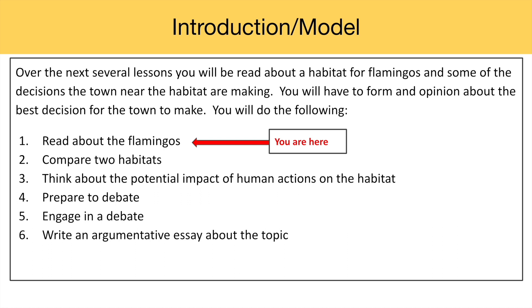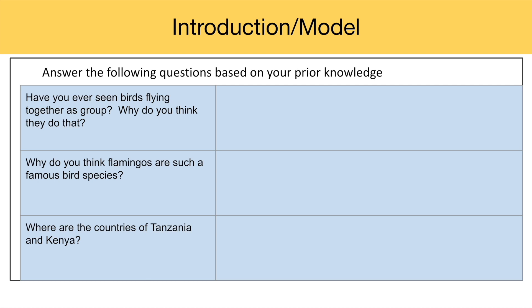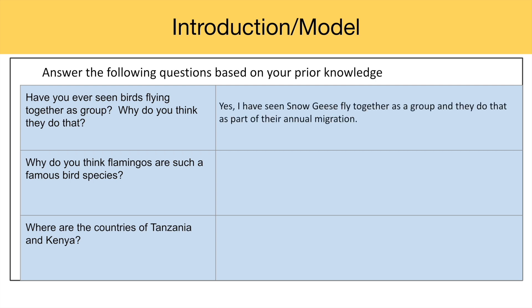Answer the following questions based on your prior knowledge — the knowledge that I already have before reading about flamingos. The first question asks: Have you ever seen birds flying together as a group? Why do you think that? Well, I've seen snow geese fly together as a group, and they do that as part of their annual migration. So birds do fly as a group together in their annual migration.